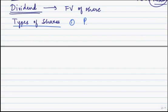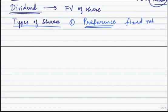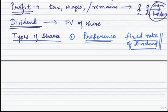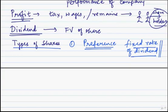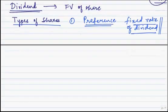Now, one type of share is called a preference share. Preference shares are given to some specific shareholders, and what is special is that these shareholders are entitled to a fixed rate of dividend. As we know, dividend may vary every year depending on profit, but those shareholders who get a dividend at a fixed rate — whatever the profit may be — their shares are called preference shares.